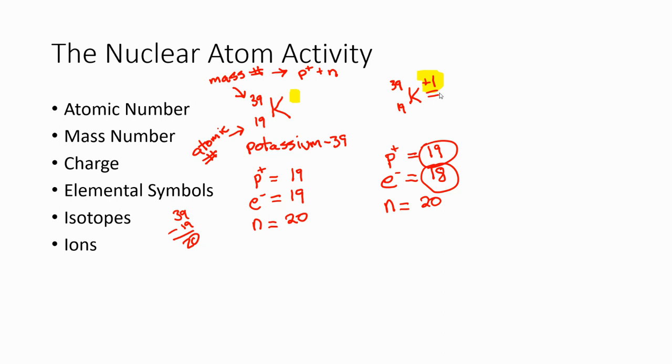Anytime you have a plus ion, we call that a cation. Doesn't matter if it's plus one or plus two or plus three, what have you. So let's look at another case. Let's say I've got something that is a negative ion.